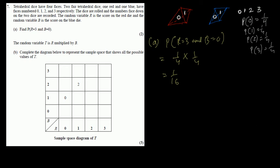For part B we complete the table where the random variable T = R multiplied by B. We multiply the scores: 0×0=0, 1×1=1, 1×3=3, 2×0=0, 2×1=2, 2×2=4, 2×3=6, 3×0=0, 3×1=3, 3×2=6, 3×3=9. This gives us the random variable T for each combination.